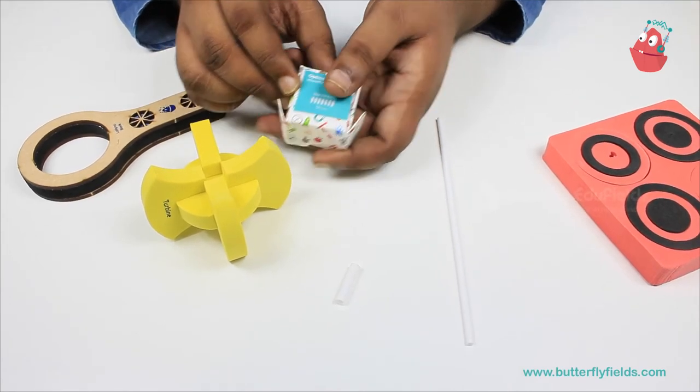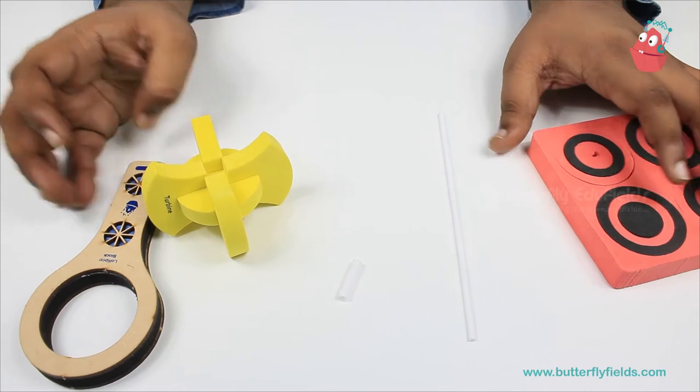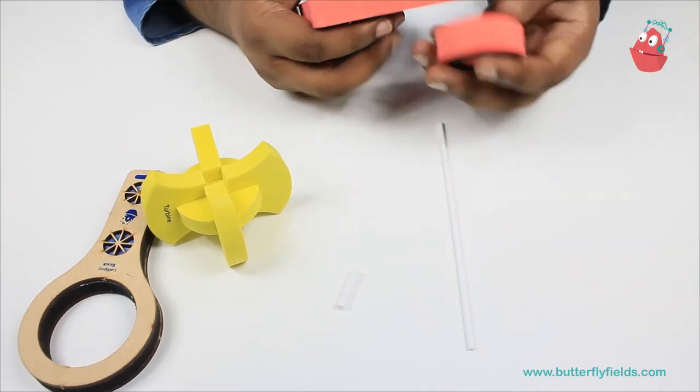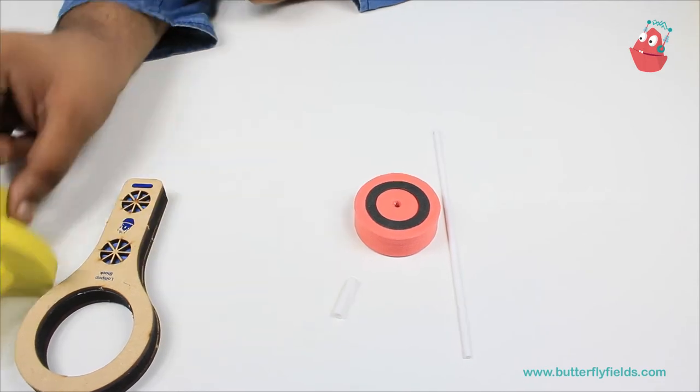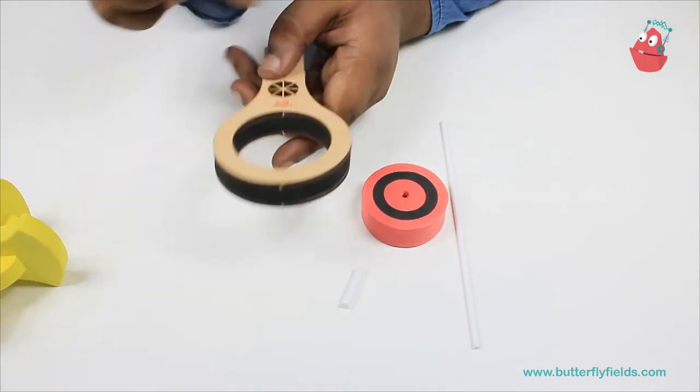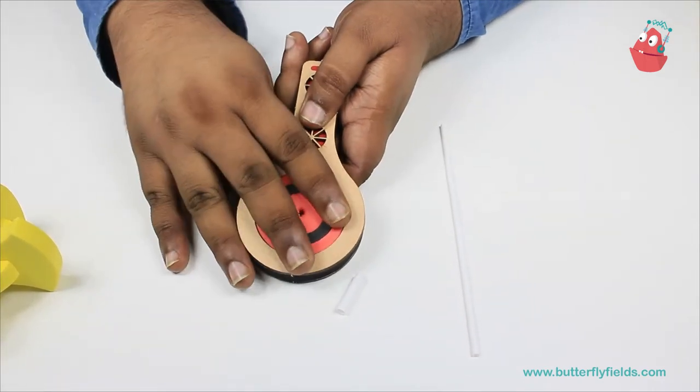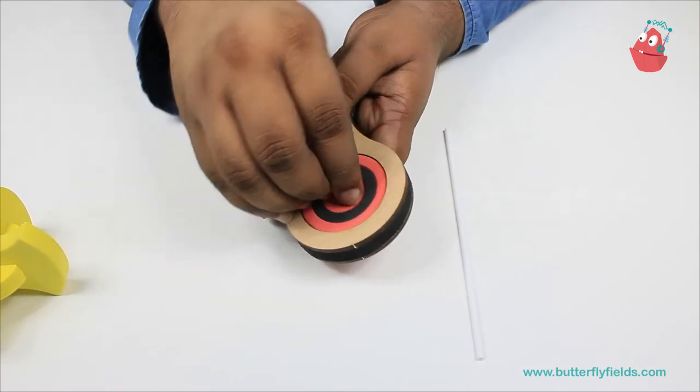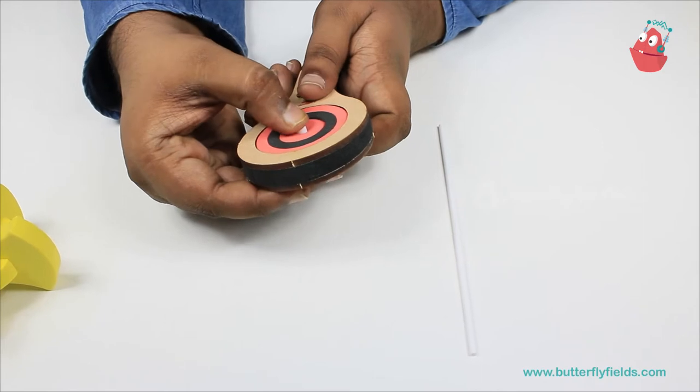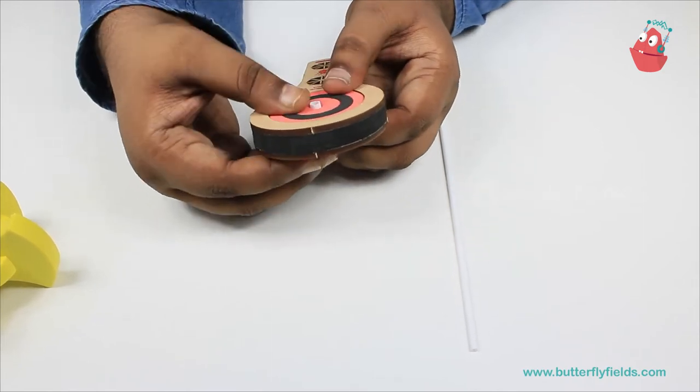We will need a lollipop block and one focus bit. What we'll do is, into this lollipop block, fix the focus bit and the short thick straw into that. In just a second, you will understand why we are fixing the straw.